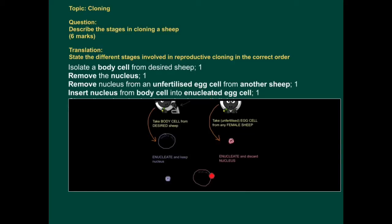So the next stage is insert the nucleus from the body cell into the enucleated egg cell. In other words, the egg cell without its nucleus. And you can see we're doing that there. So we've now moved that nucleus inside the egg cell.